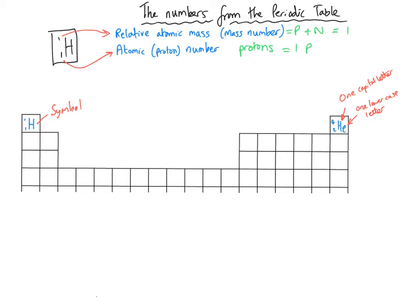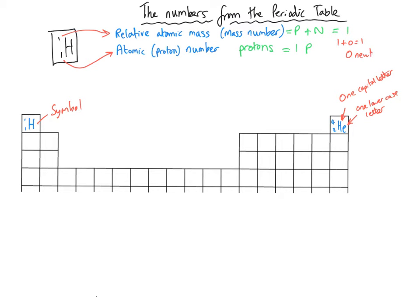Because we know hydrogen has got one proton, then: protons (1) plus neutrons equals 1. So the number of neutrons must equal zero, because one plus zero equals one. That means hydrogen has got zero neutrons in its nucleus.